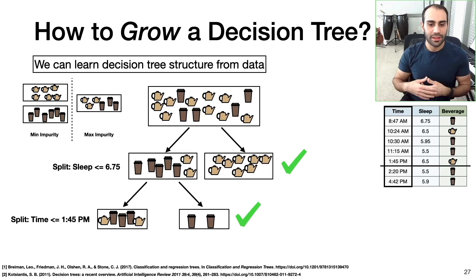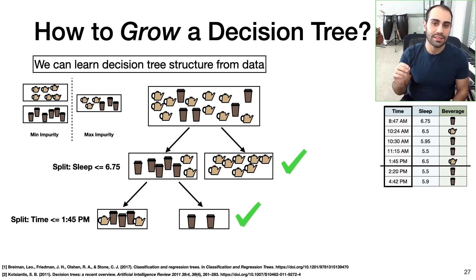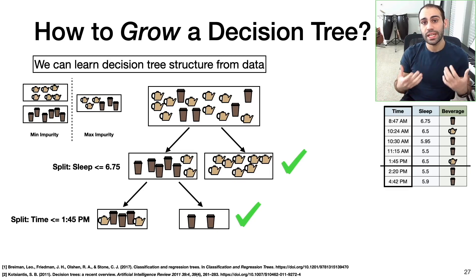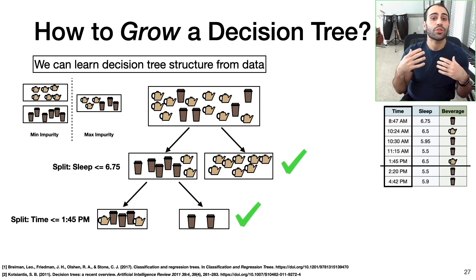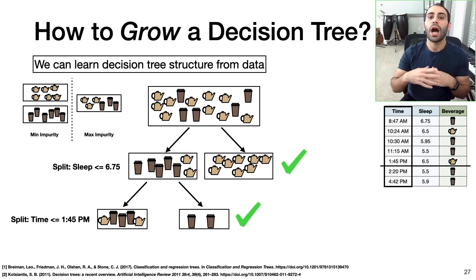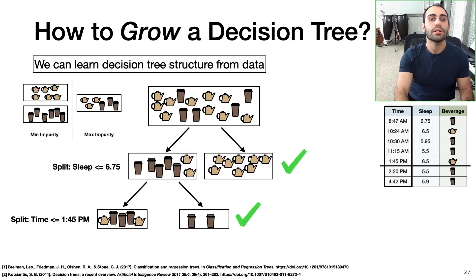While this might sound great — we can have a perfect classifier, a decision tree that is absolutely perfect — this is not such a great idea because it brings up a very well-known problem in machine learning known as the overfitting problem. Overfitting is when you learn a machine learning model based on some dataset, but your model becomes over-optimized on the training data. When you try to apply that model to new data it's never seen before, you'll find that your model is actually very inaccurate.